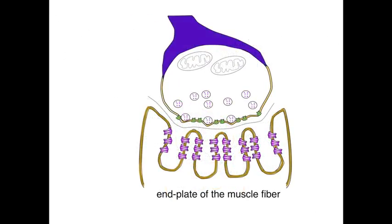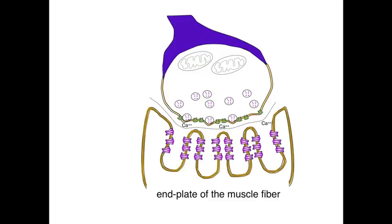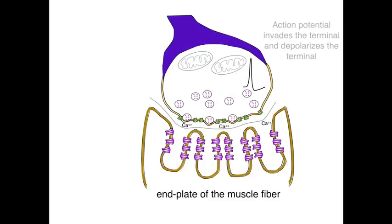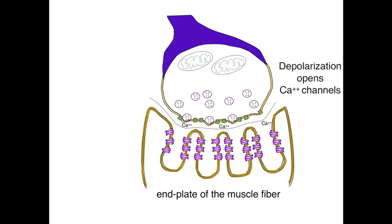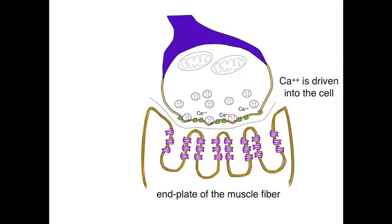Acetylcholinesterase is the enzyme that breaks down acetylcholine into choline and acetate, after acetylcholine is released from the axon terminal. Now let's make the terminal even larger and follow the events that trigger the release of transmitter. The first thing that occurs is an action potential invades the terminal and depolarizes the terminal. The depolarization opens the voltage-gated calcium channels, which allows calcium to be driven into the cell.